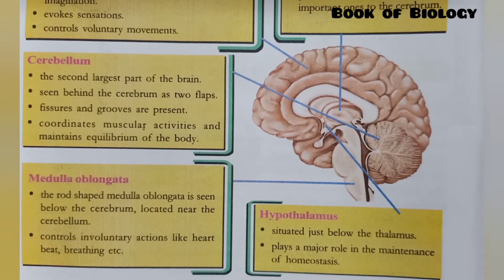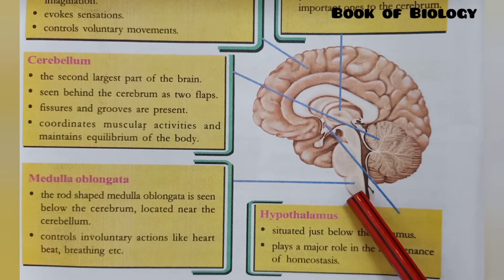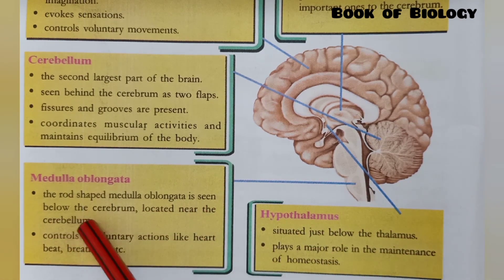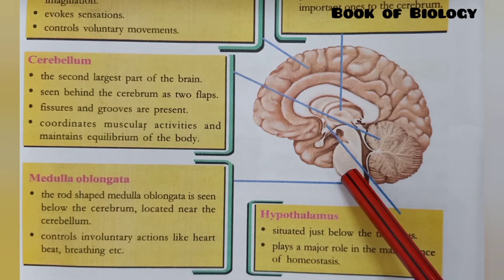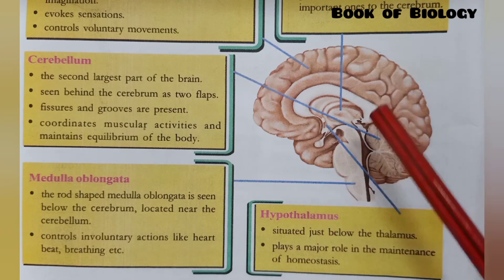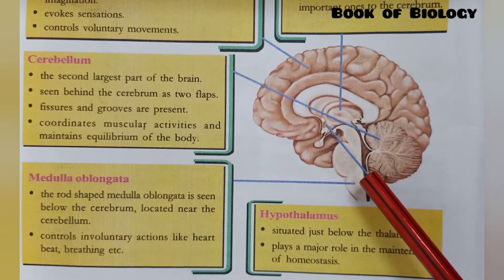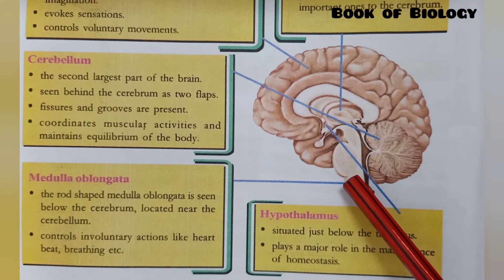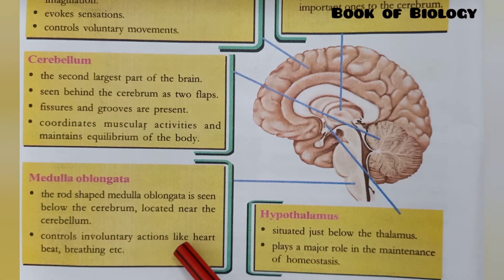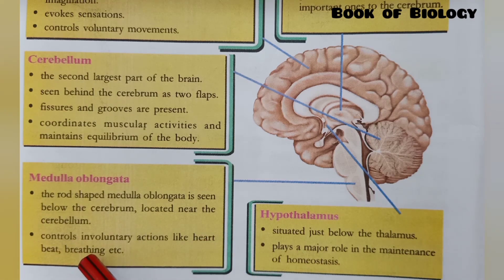The next part is the medulla oblongata. It is rod-shaped and is located below the cerebellum. Its function is to control involuntary actions like heartbeat and breathing, which we cannot consciously control.